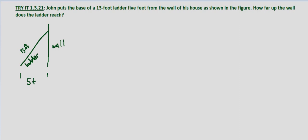We have a ladder that's 13 feet, a wall where we're looking for how far up it goes, and a base distance from the wall of five feet. We're going to use the Pythagorean theorem: a squared plus b squared equals c squared.